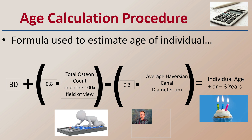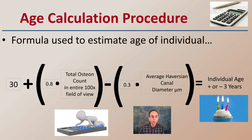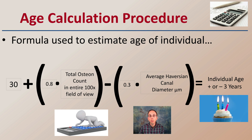To apply the age calculation formula: take 30, add the total number of osteons counted in the entire 100x field of view multiplied by 0.8, then subtract 0.3 times the average Haversian canal diameter in micrometers. Those numbers will give the approximate age of the individual, plus or minus three years. Getting bone slides, using the microscope with proper calibration, and going through this activity can determine the age of an individual bone — which is very good for a general classification and can definitely help the investigation process.